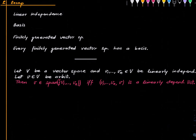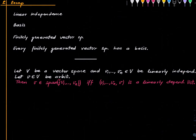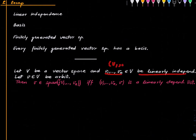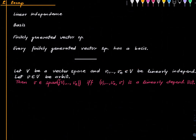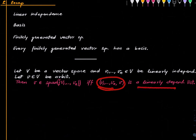One of the main key facts that we need to know is this, which was given as a problem previously. It is very simple and straightforward. It says that if we have a vector space V over some base field F and we have a linearly independent list v1 up to vn, then for any arbitrary vector v in the vector space, v belongs to the span of v1 up to vn if and only if the appended list is linearly dependent.